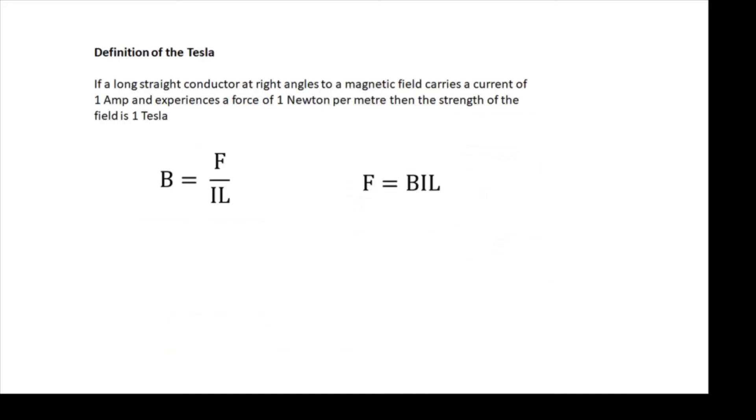In SI units, if a long straight conductor at right angles to a magnetic field carries a current of one amp and experiences a force of one newton per meter, then the strength of the field is one tesla. This is our definition of the tesla.